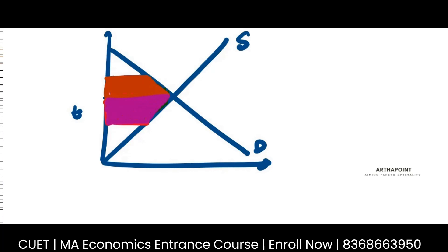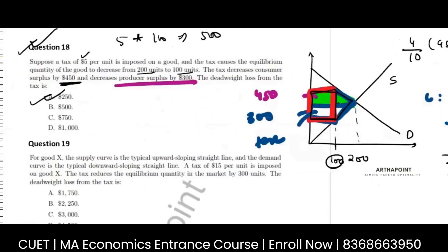So I was given red and purple. I added the two. So I got this bigger area. And from that, I subtracted the tax revenue. So I got the green. This is what I have done. Thank you.